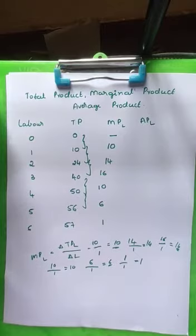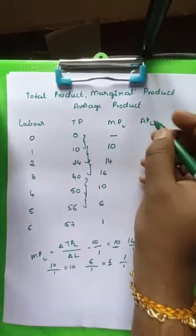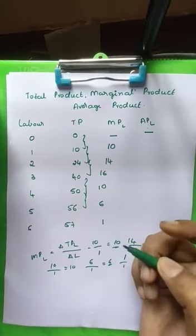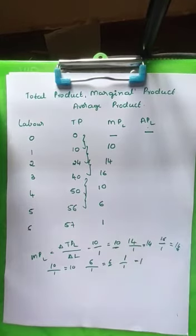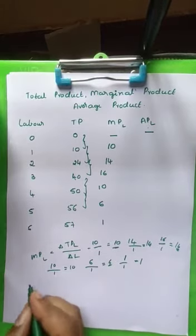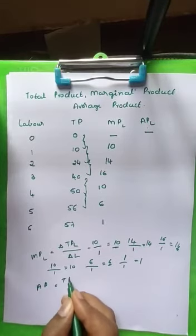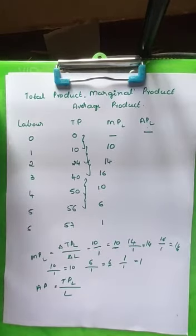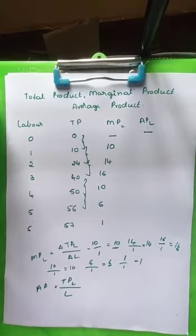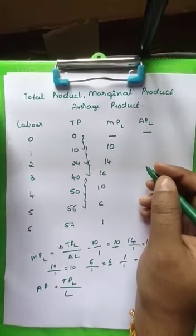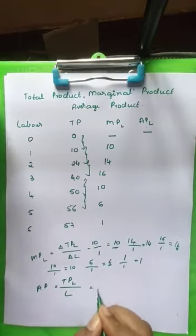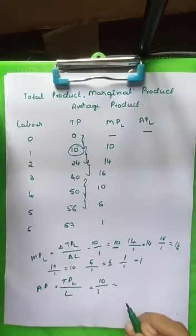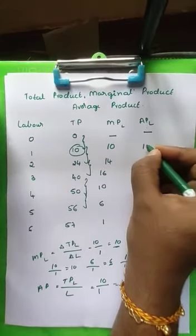Now we have to do the calculation for the average product. When labour and total product are both 0, the average product is also nil — when there is no labour and no capital, there is no output and no average product. The formula to find average product is: AP = TPL divided by L. For the first one, when labour is 1 and total product is 10: 10 divided by 1 equals 10, so the average product is 10.